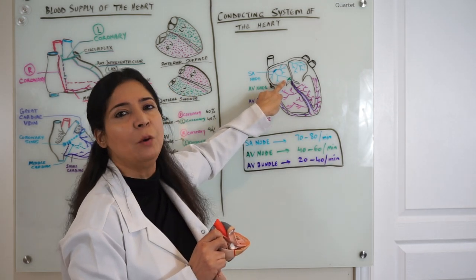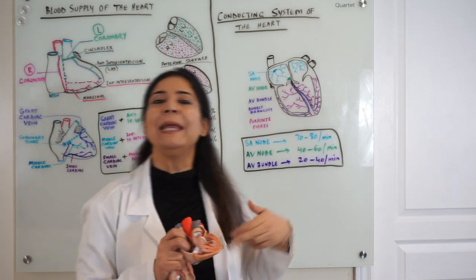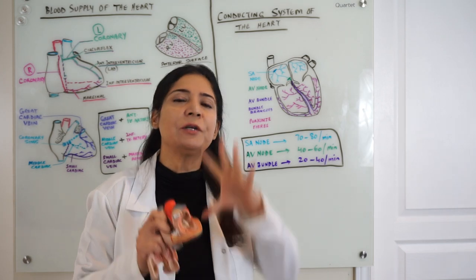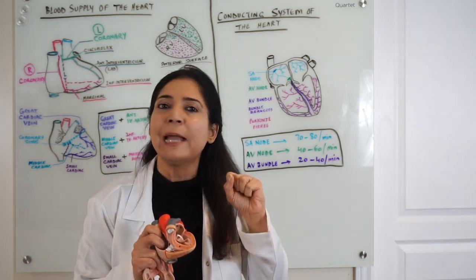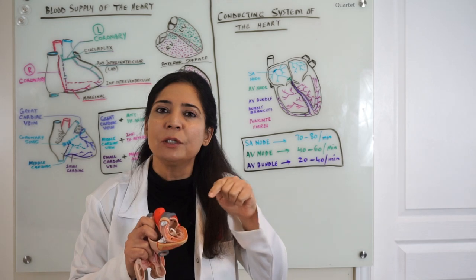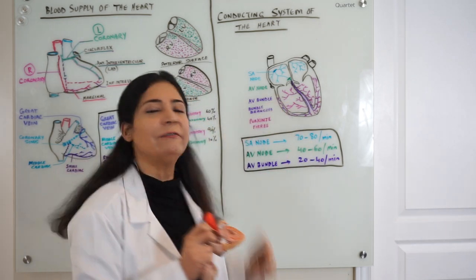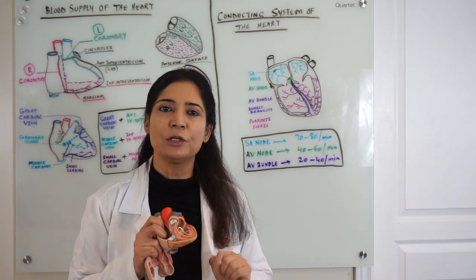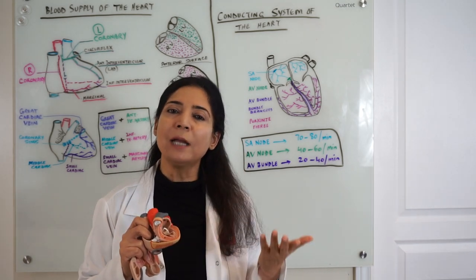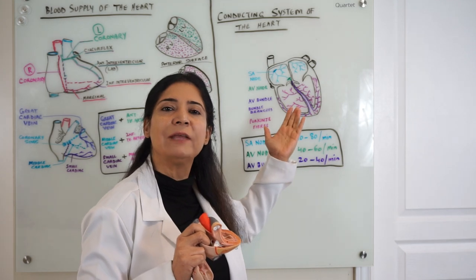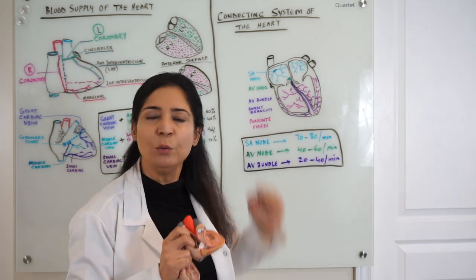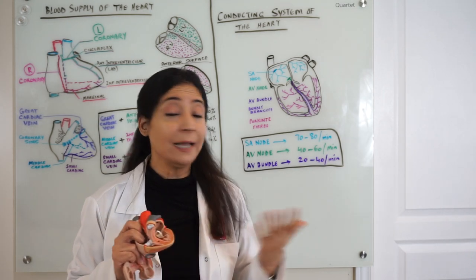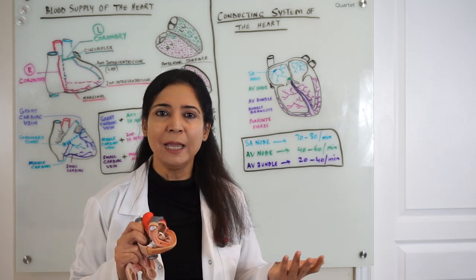If there is a blockade at the level of the AV bundle or AV node, the atria will keep contracting and relaxing, but the action potential won't reach the ventricles. The ventricles stay silent because the blockade prevents downward transmission of the stimulus — this is a very critical condition: ventricular failure.